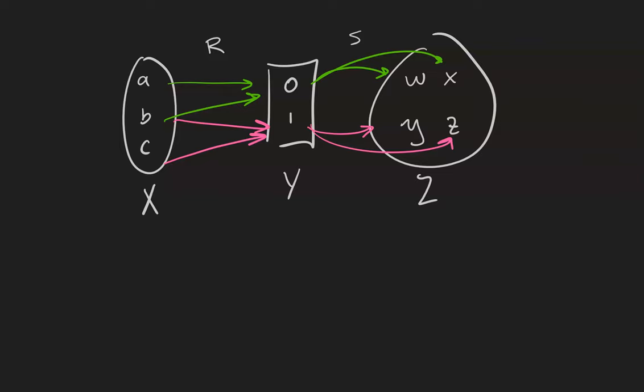For example, since I can get from A to 0 to W, the pair (A, W) is going to be in the relation RS. Therefore, RS consists of the pairs (A, W), (A, X), because 0 bridges A and W and X.